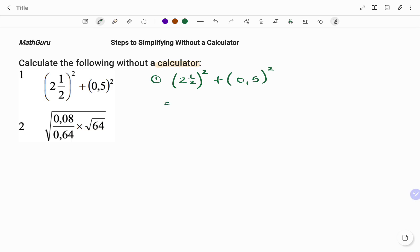Starting with the first term, I'm going to change my mixed number, that's 2 1/2, into improper fraction. And that will be 2 times 2, that's 4 plus 1, 5 over 2 raised to the power of 2.